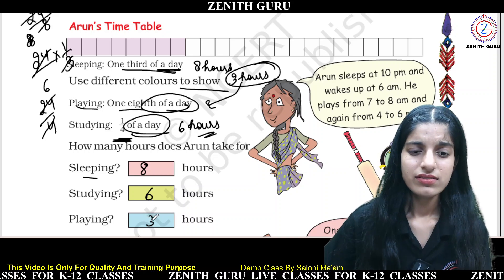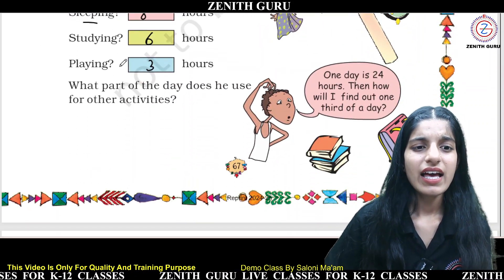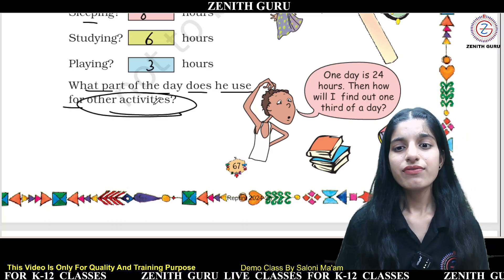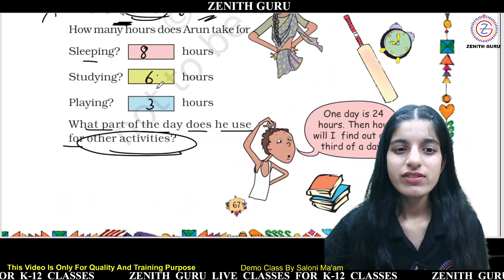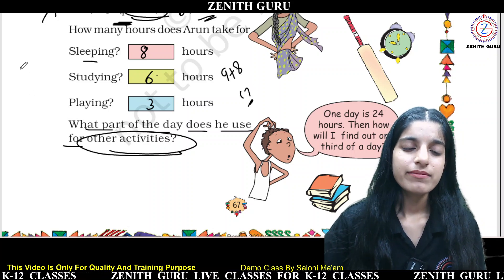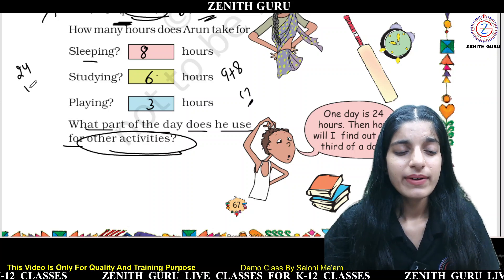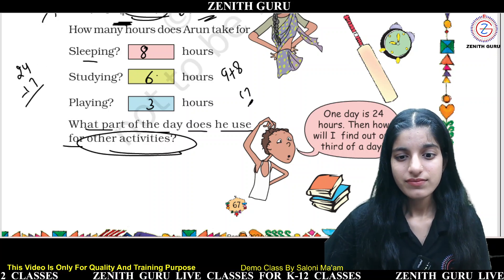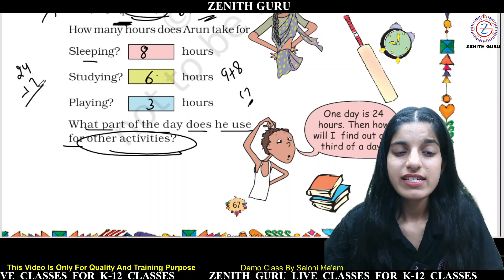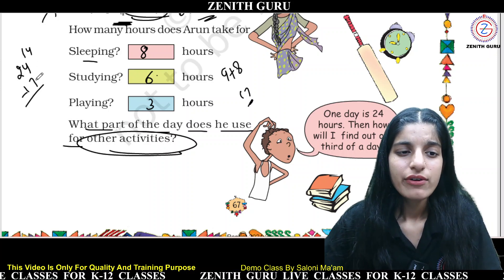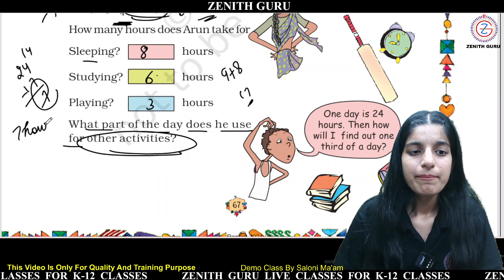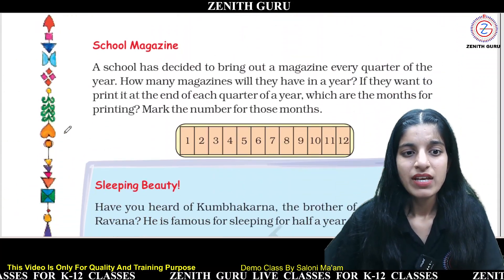For other activities: add 6 plus 3 plus 8, which is 17 hours. Then 24 minus 17 equals 7 hours remaining. So Arun has 7 hours for other activities.